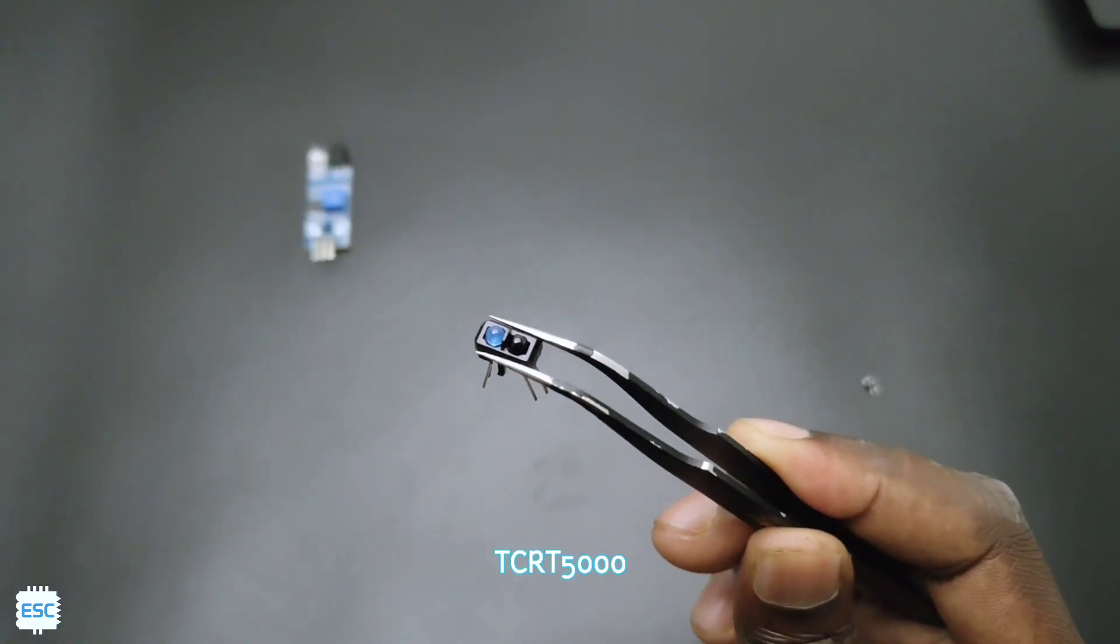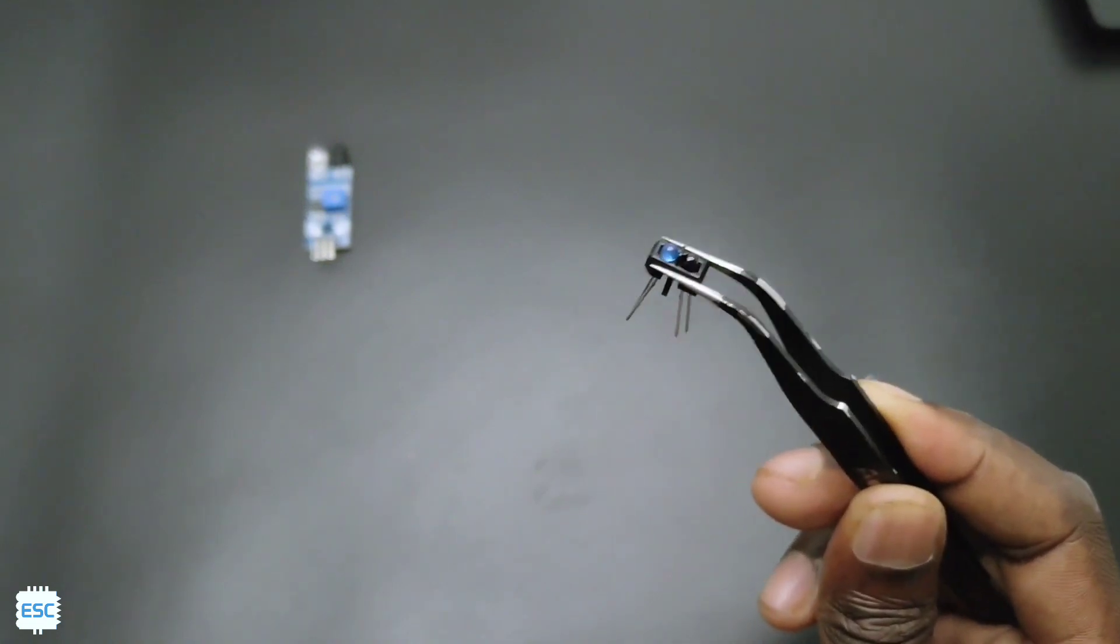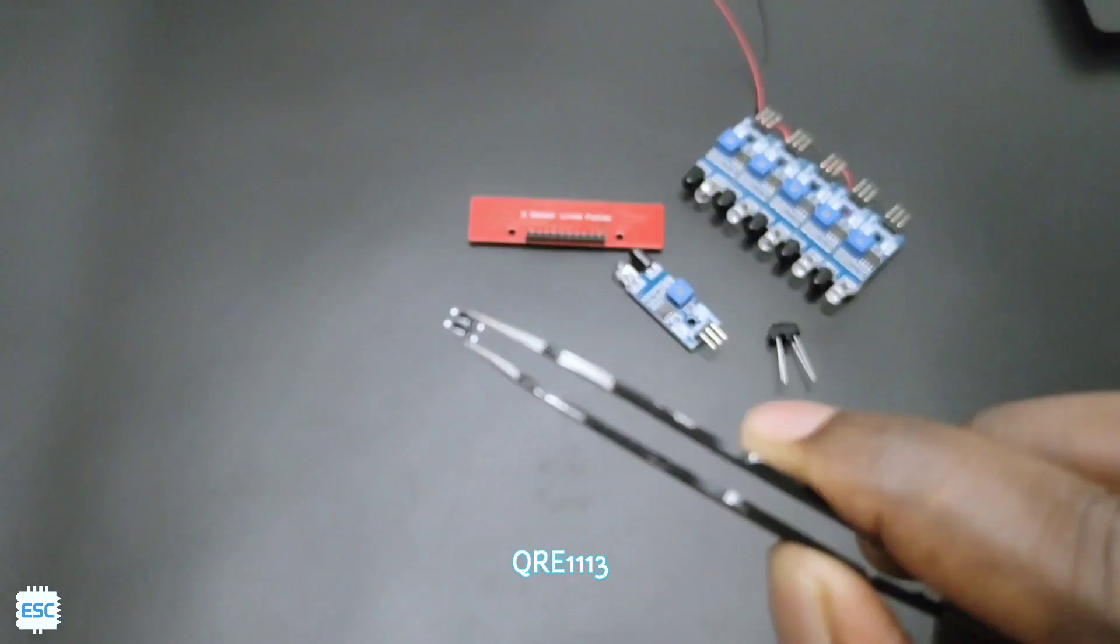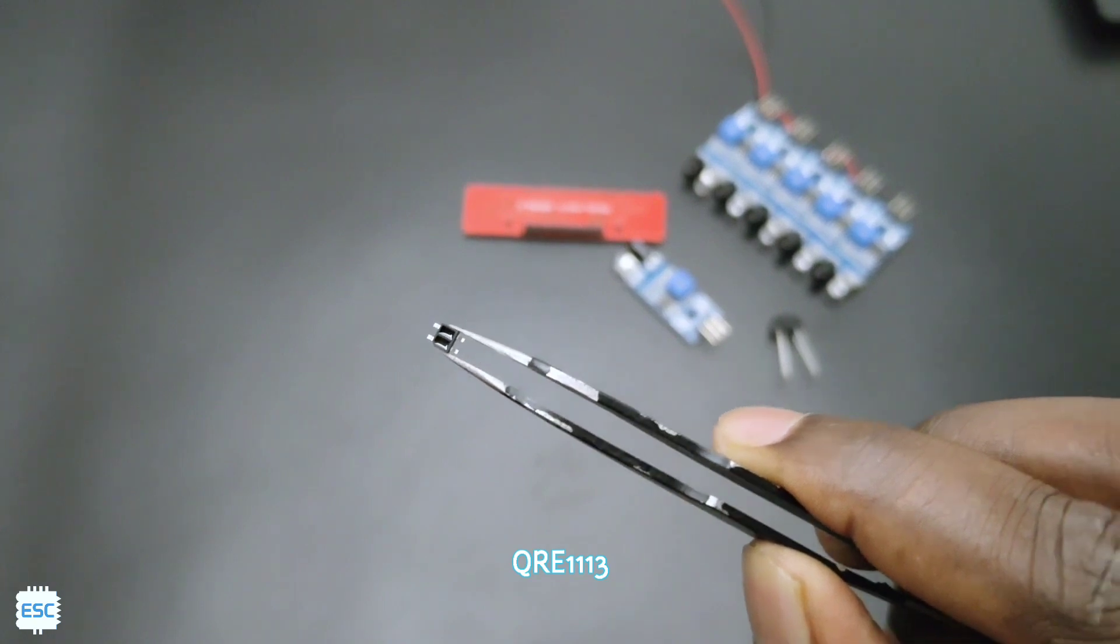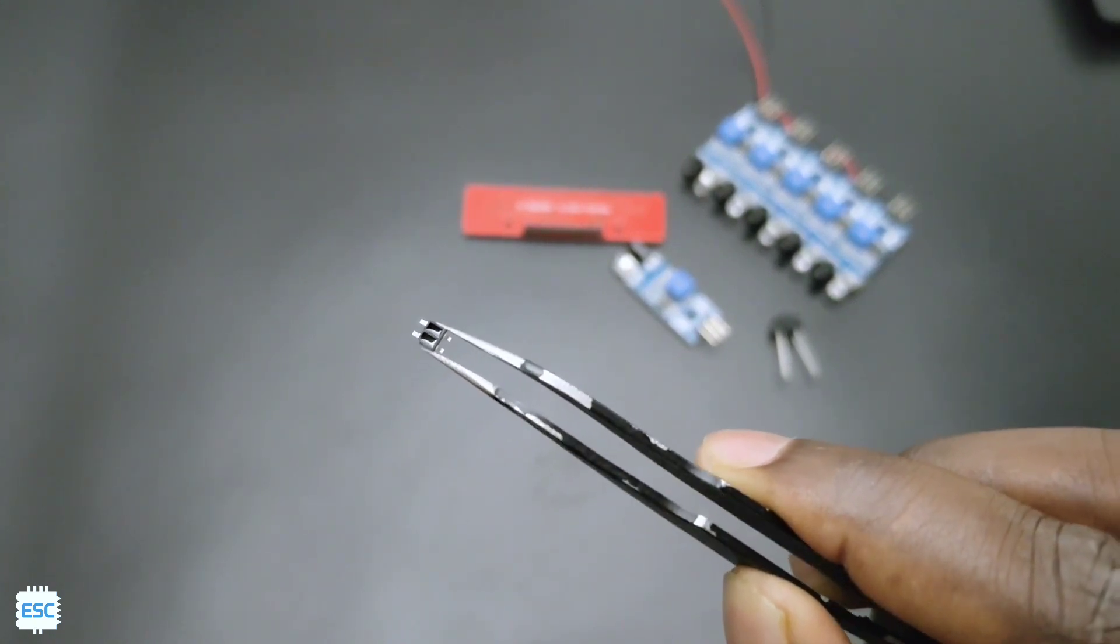The next one is this TCRT 5000 sensor. To interface this, we need to use lots of other components and soldering is required. The final one is this tiny QRE1113 sensor. This is the same sensor that we can see in the QTR sensor.